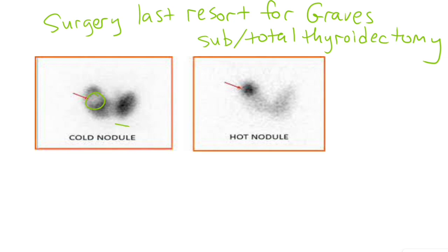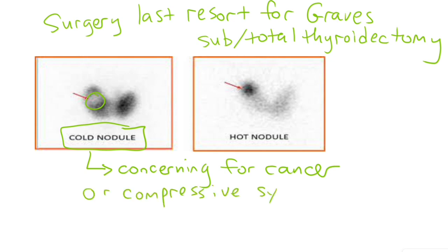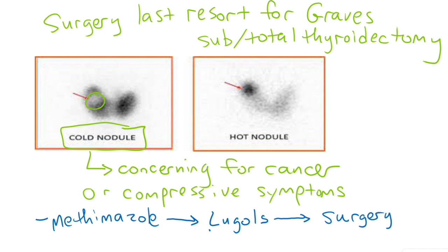Surgery should be used in Graves' disease if the patient has nodules that could be cancerous, which would look like cold nodules on radioactive iodine scan, or if they have compressive symptoms. Use methimazole until euthyroid, then start Lugol solution prior to surgery for two weeks to decrease vascularity.